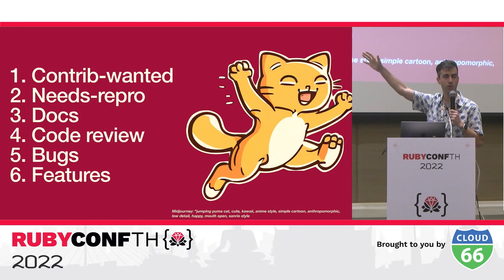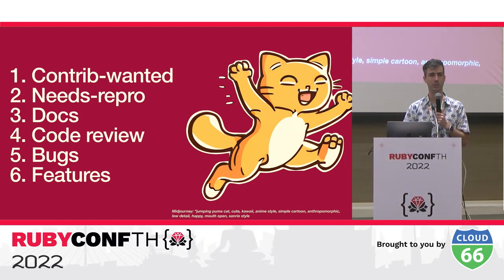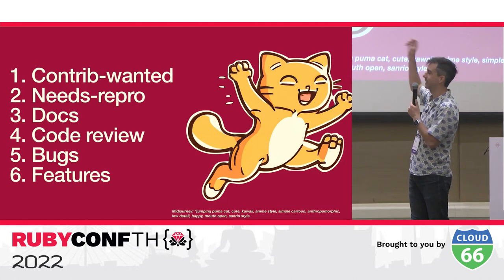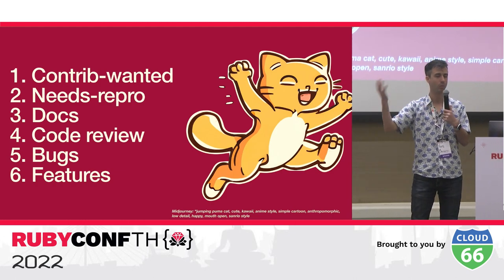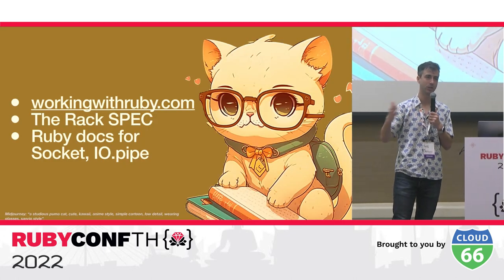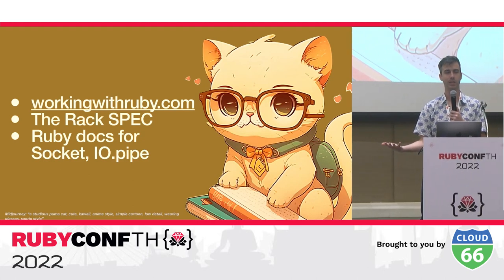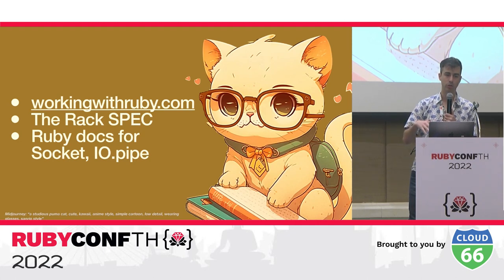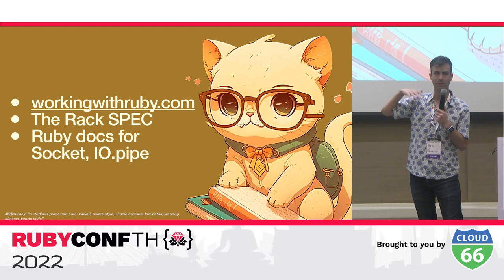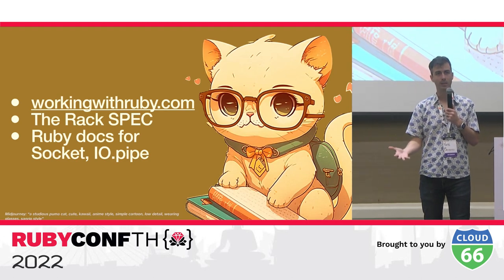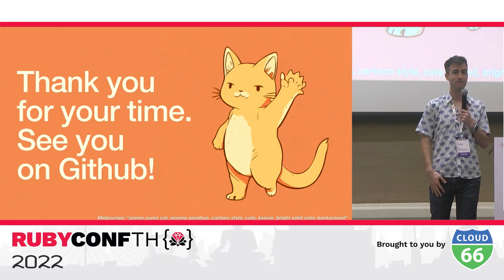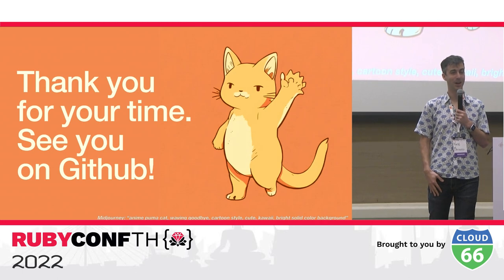This suggested contribution order isn't really Puma-specific — it's a good OSS contribution strategy for anyone getting started. Not every project has the exact labels Puma uses, but those kinds of issues exist; you just have to read the issue tracker yourself. If this presentation got you interested, check out workingwithruby.com — free books by Jesse Stormer about working with sockets, still applicable today. Also go read the Rack spec; it's really short and a great quick read. Thank you very much, and I hope to see you on GitHub.